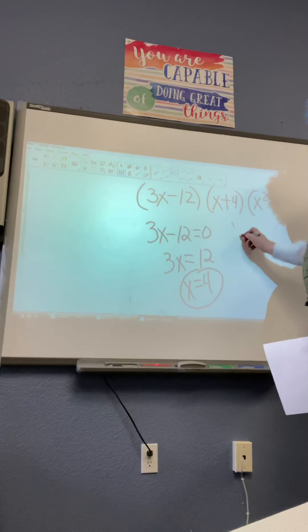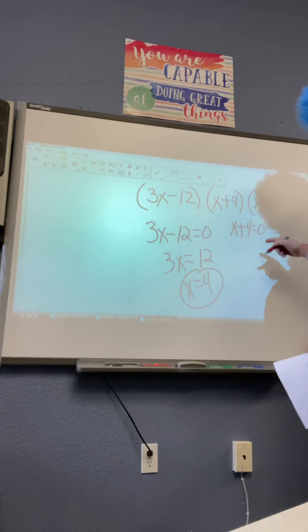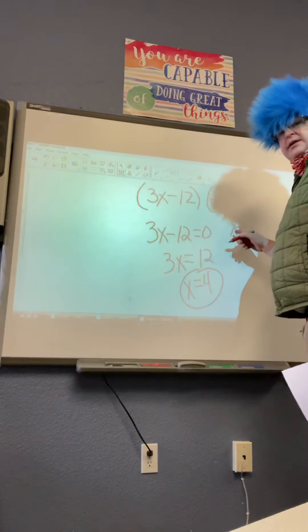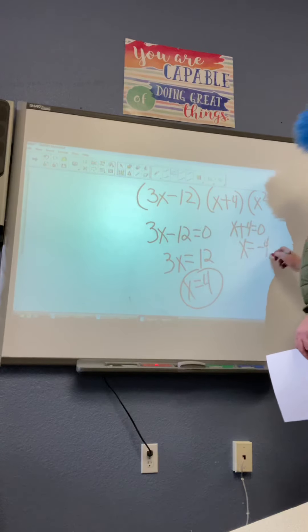And then the other one, we have x plus 4 equals 0. To get rid of the positive 4, we have to subtract 4 from both sides. So x is negative 4.